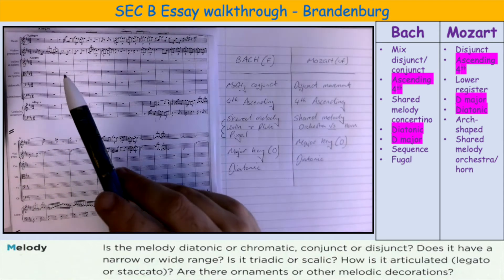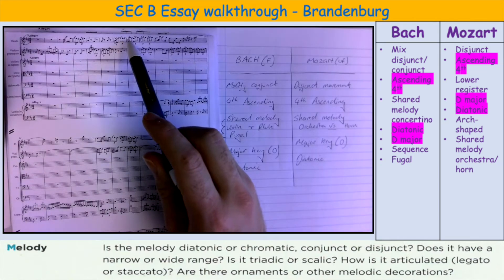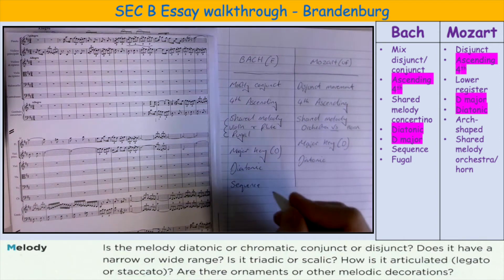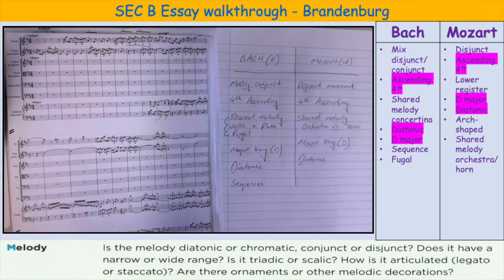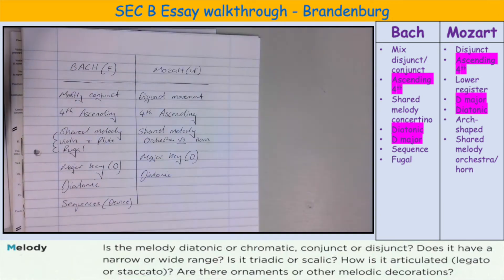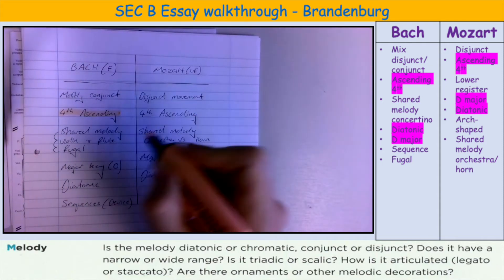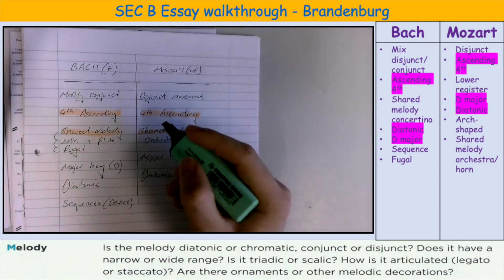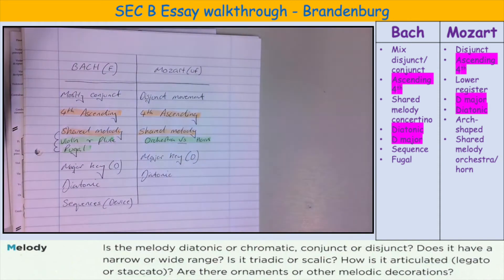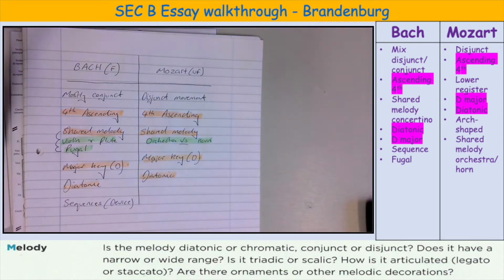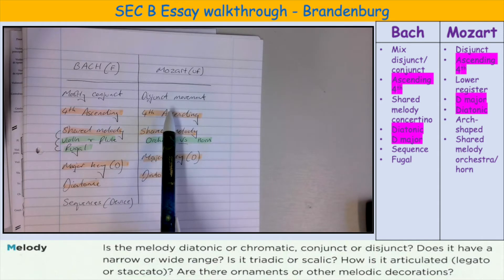I can also see a sequence here — look, this motif is copied and it goes up, up, and up. So we can put sequence as a melodic device for Bach. I didn't notice any sequences in the Mozart. Now let's highlight the similarities: both start with an ascending fourth, both have a shared melody but in different ways — in Mozart it's one after the other, in Bach they overlap. Both are in D major, both are diatonic. One uses sequences, the other doesn't. One is mostly conjunct, the other mostly disjunct.